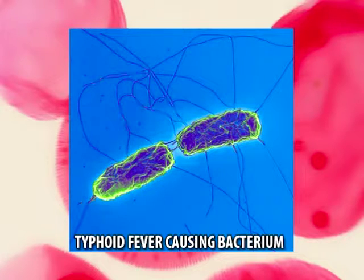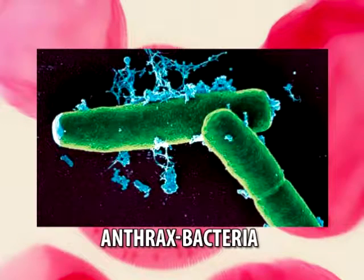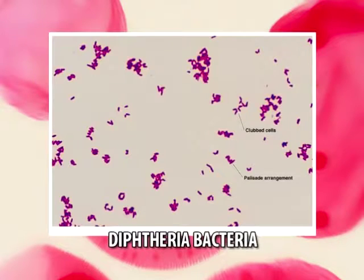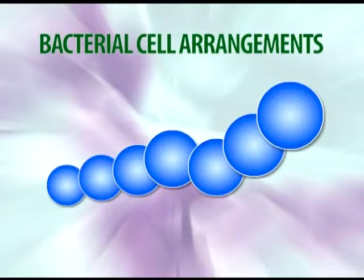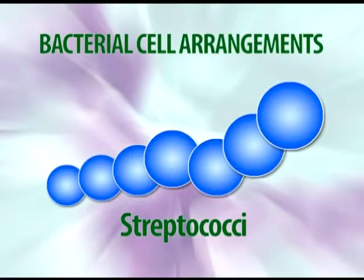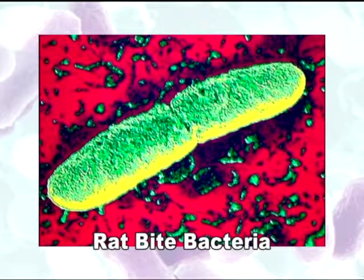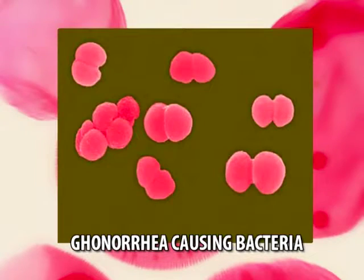Rods also vary in shape: they can be slender, for example in the case of the typhoid fever-causing bacterium, or rectangular as in the case of the anthrax-causing agent, or in some cases club-shaped, for example diphtheria bacteria. Streptobacilli are chains of rods — many rods forming a chain — for example, the bacterium causing rat bite fever.